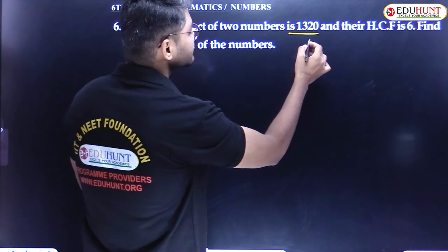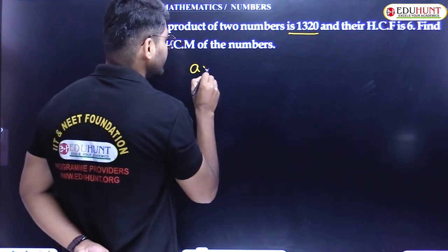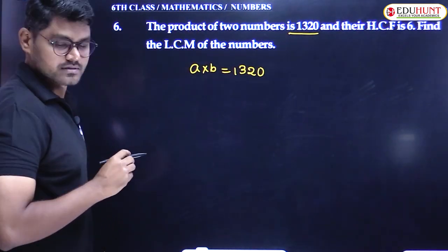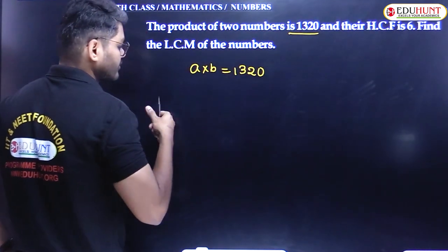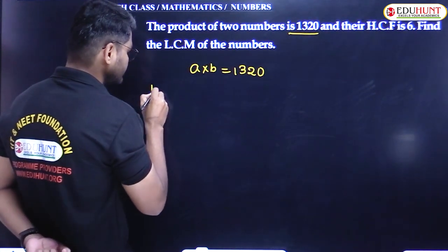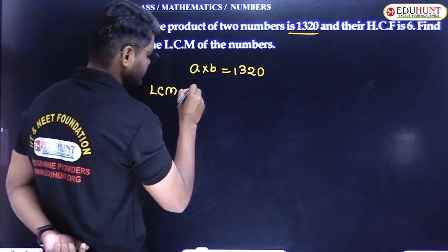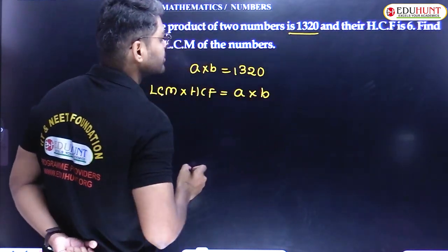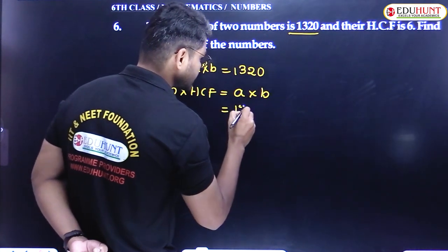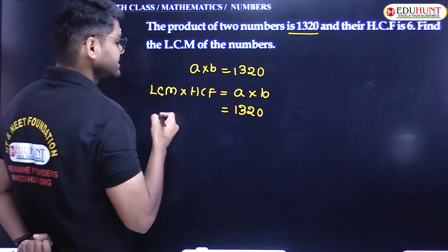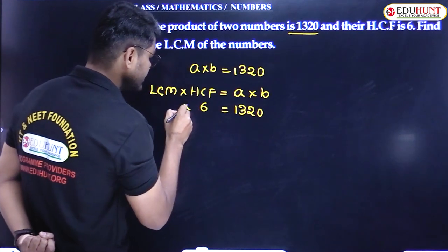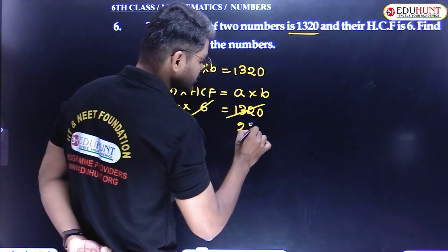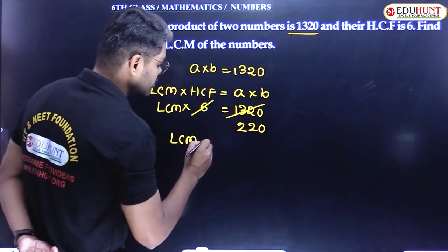The product of two numbers is 1320 and their HCF is 6. Find the LCM. Using LCM × HCF = product of two numbers: LCM × 6 = 1320. Therefore LCM = 220.